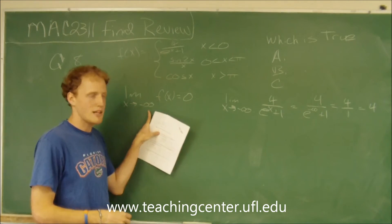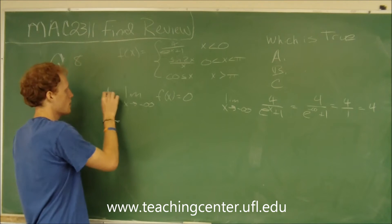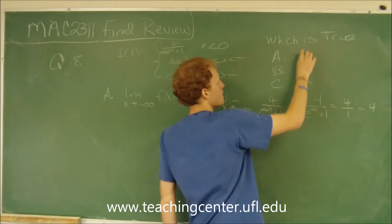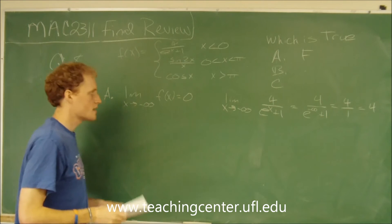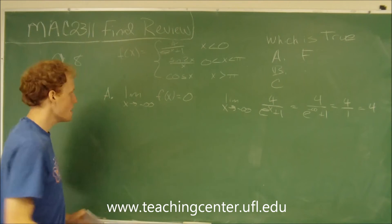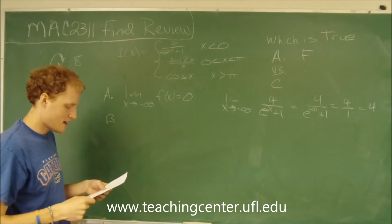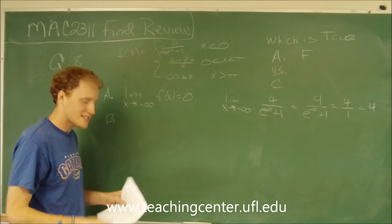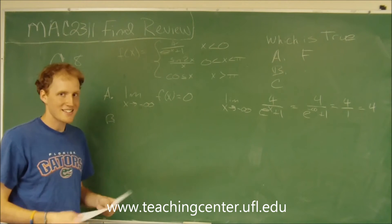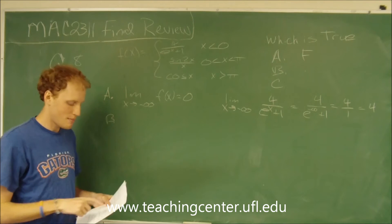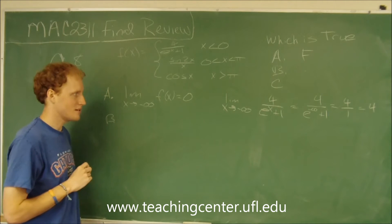So that means this statement is false — a is false. Now, b says that f of x can be made continuous at x equals 0 by defining f of 0 equals 2.